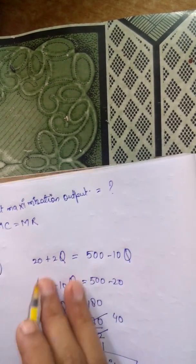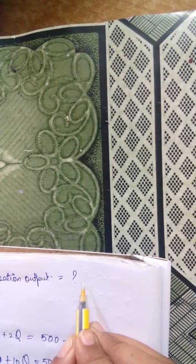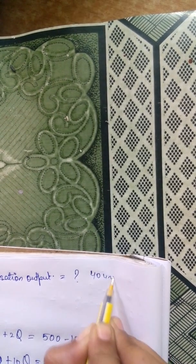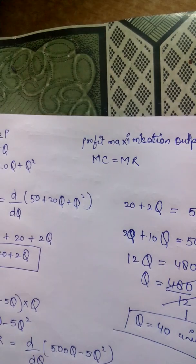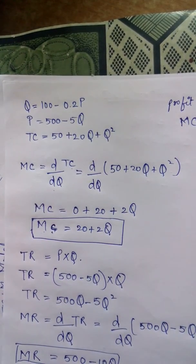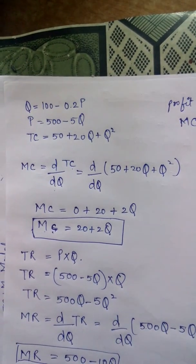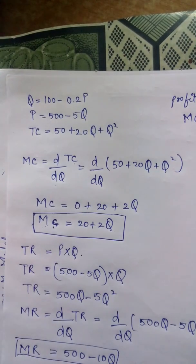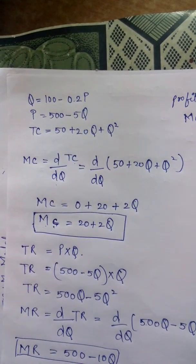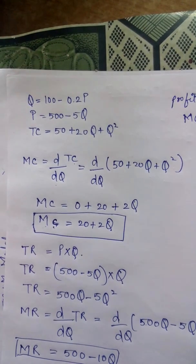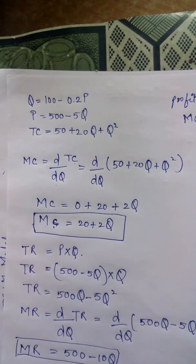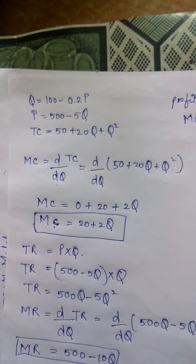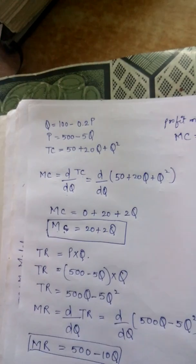The profit maximization output is 40 units. Thank you for watching this whole video. This question is from the management paper 3, December 2015. This type of question is continuously asked in management economics and commerce. Please like and subscribe to my YouTube channel. Thank you for watching this full video.